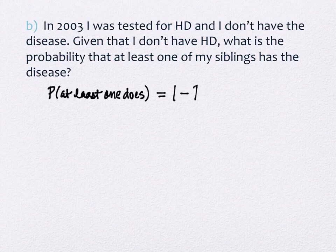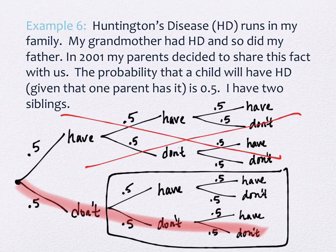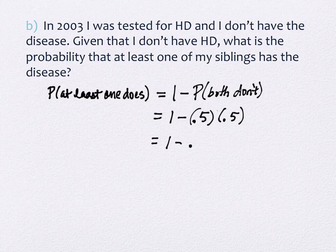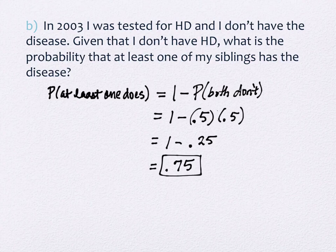Using the same approach: the probability that at least one of them has it equals one minus the probability that both don't. On the tree diagram, that's the bottom branch — now with only 0.5 twice. So: one minus 0.5 times 0.5 equals one minus 0.25, which is 0.75. There is still a 75% chance that one of my siblings has it — and if they do, it's a 50/50 shot for each of their kids.